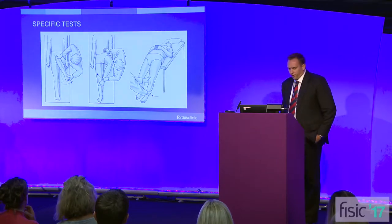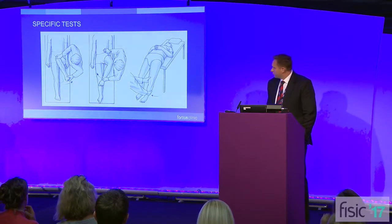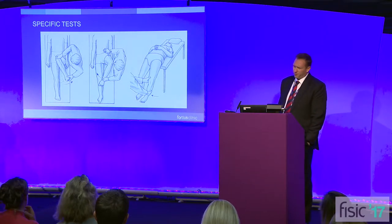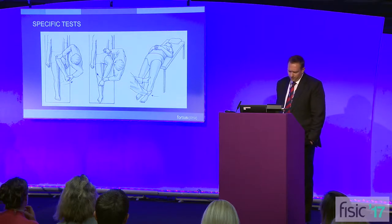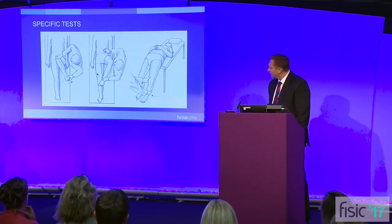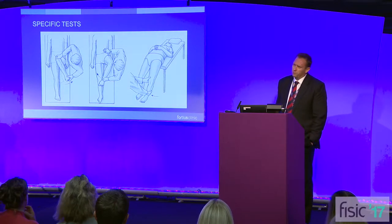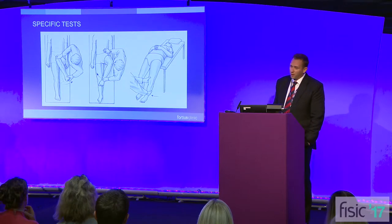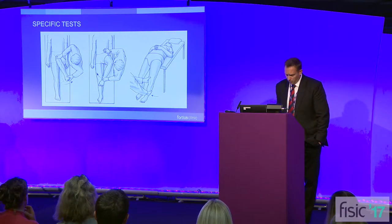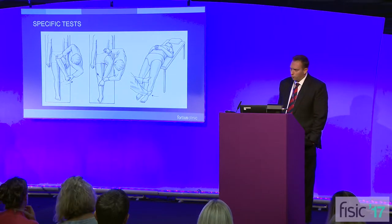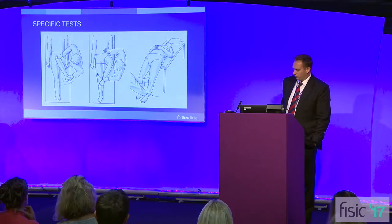On the left we have the impingement test — flexion, adduction, internal rotation. Sometimes that will bring on posterior hip pain, especially with piriformis issues. FABER is in the middle. The apprehension test on the right was initially described as a test for dysplasia and anterior rim insufficiency, where the patient feels they're subluxing out the front. But equally, looking at posterior external rotation of the hip in extension is quite useful when looking for posterior hip issues.